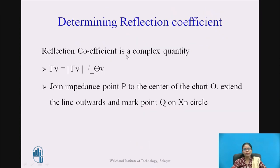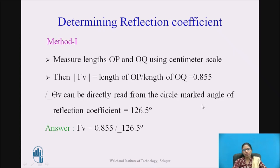To determine the reflection coefficient — which is a complex quantity consisting of magnitude and angle — join the impedance point P to the center of the chart O, extend the line outward, and mark the point Q on the outermost Xn circle. In Method 1, measure the length OP and OQ using a centimeter scale. The ratio OP to OQ gives the magnitude, which in this case is 0.855. The angle can be directly read from the angle of reflection coefficient circle, which here is 126.5 degrees.